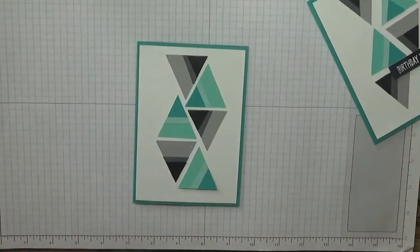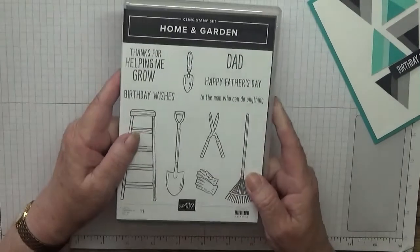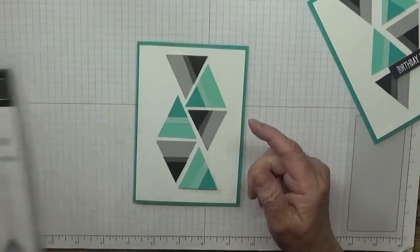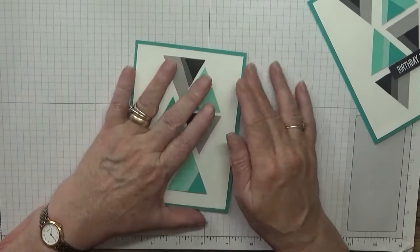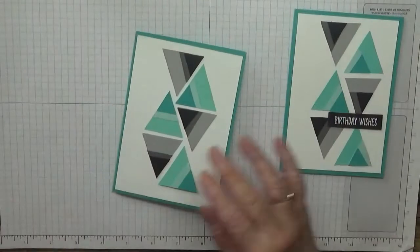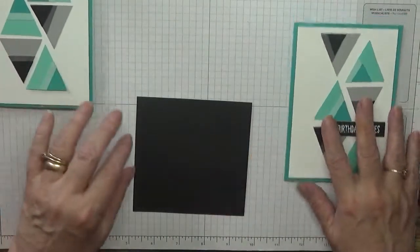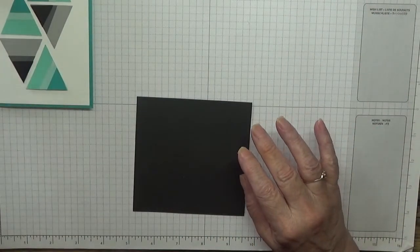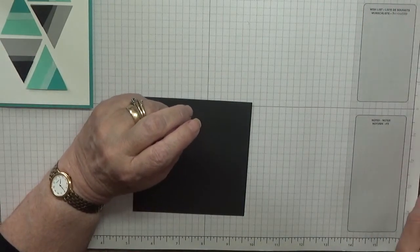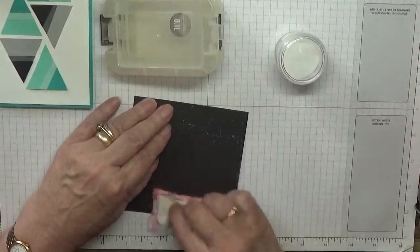Right, for the sentiment I have taken the stamp set Home and Garden and I'm using this birthday wishes. So for that I need some black card. I have my heat gun here and my embossing pad.